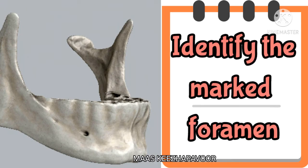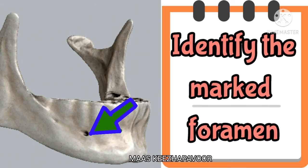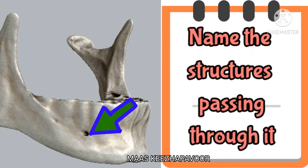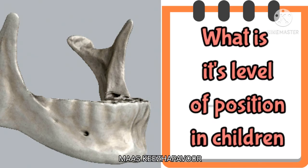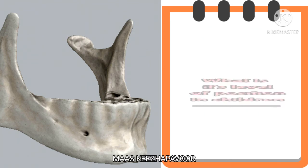Identify the marked foramen, name the structures passing through it, and mention its level of position in children.